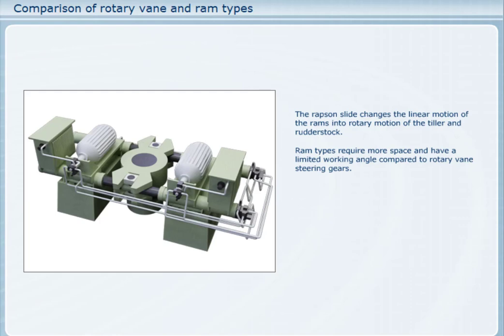The rotary vane gives a constant torque at all rudder angles, whilst with the ram type, the leverage effect of the tiller and therefore the torque increases with rudder angle. Ram type steering gears generally need a higher hydraulic pressure than rotary vane type steering gears for the same application.